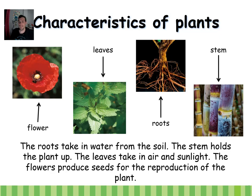The stem holds the plant up. So flowers produce seeds. Leaves take water and sunlight. The roots take water from the soil and the stem holds the plant up.